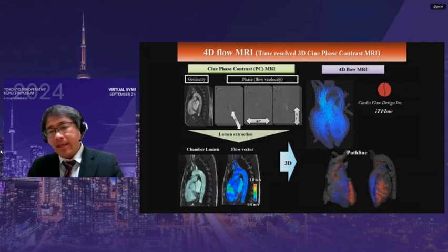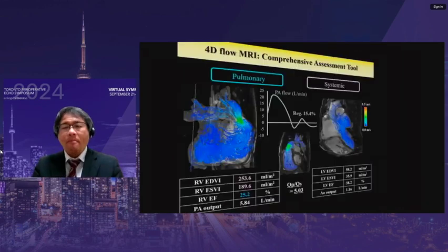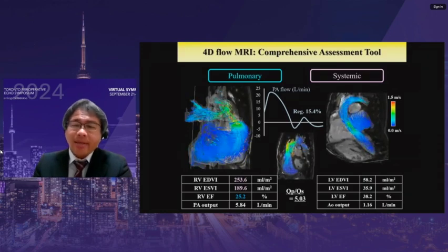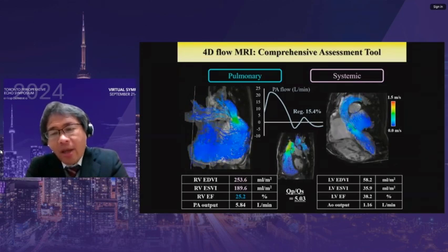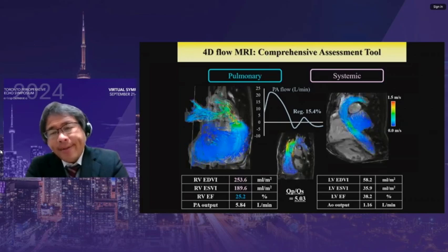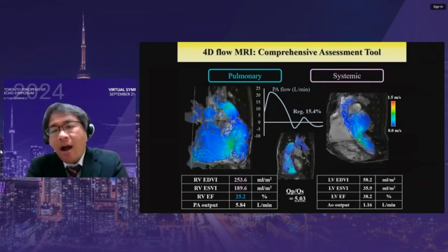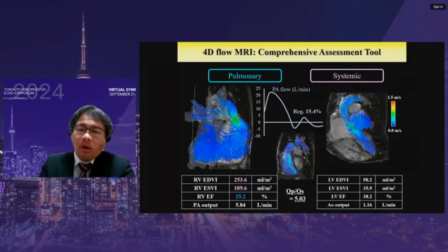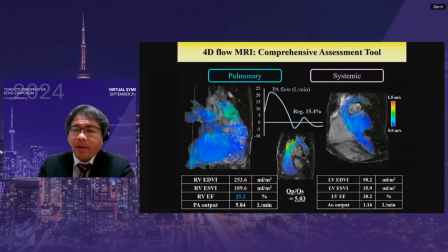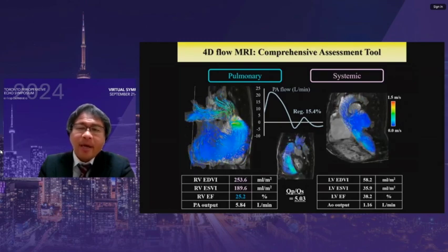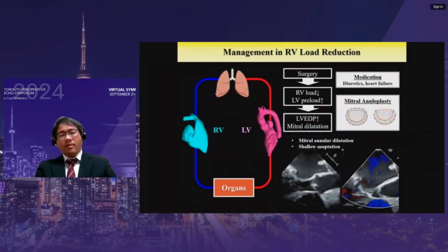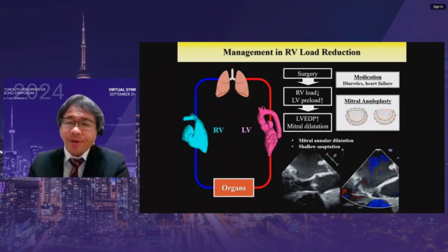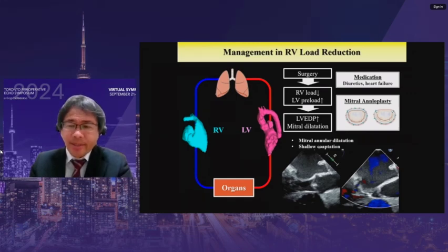We go back to the ASD case in the elderly. 4D flow MRI demonstrated a highly enlarged RV with reduced ejection fraction, whereas left ventricular volume was relatively small. A high amount of blood flow with moderate-grade pulmonary regurgitation was observed in the pulmonary circulation, and QP/QS was 5.0. ASD closure, in addition to pulmonary or tricuspid valve intervention, surely reduces the RV load.